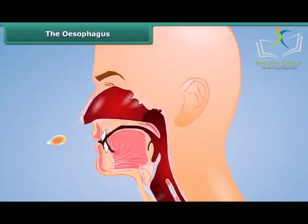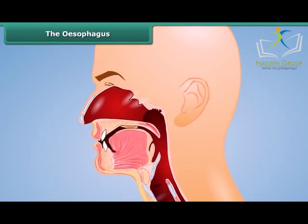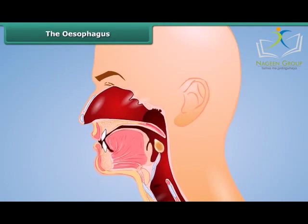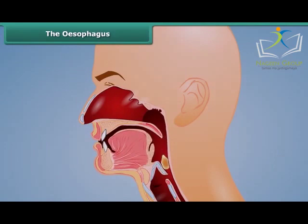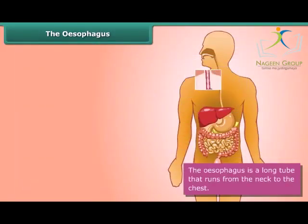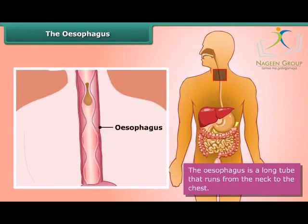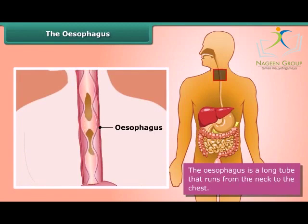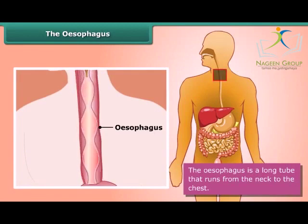When the food we eat becomes a soft mass, our tongue pushes it to the food pipe or esophagus. The esophagus is a long tube that runs from the neck to the chest. The movements of its walls force the food to the stomach.